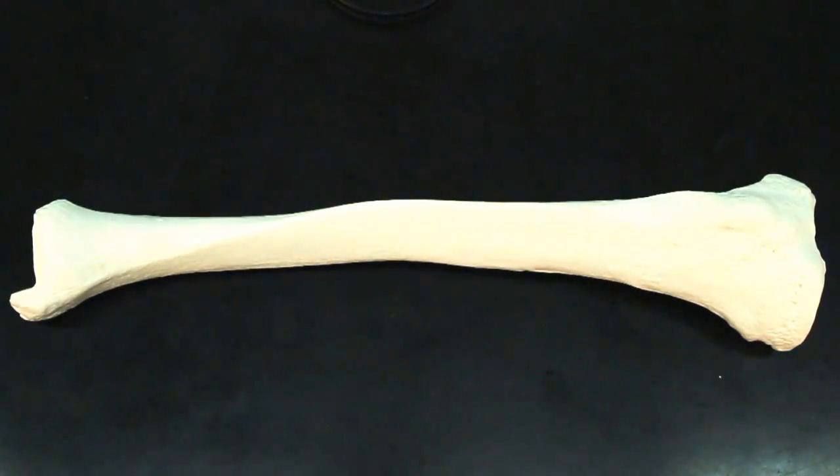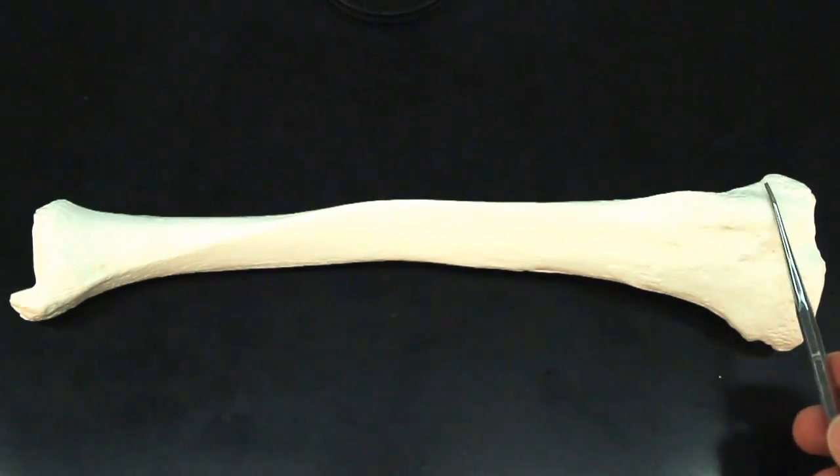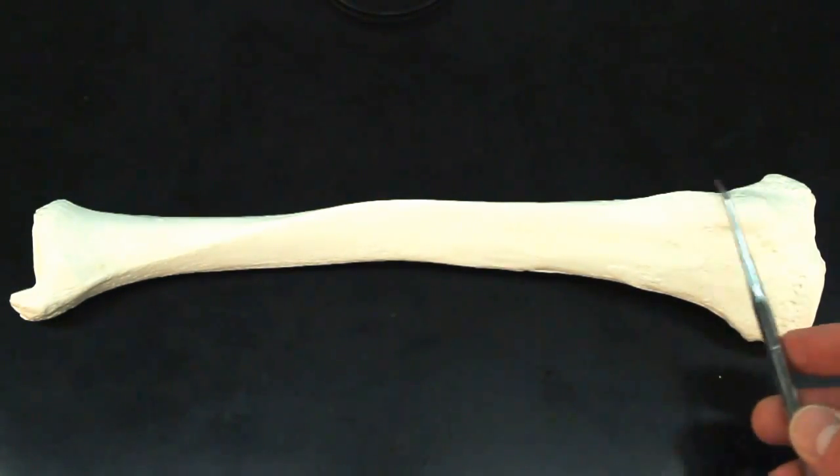This bone is the tibia. Now, the tibia has a rough protrusion on the anterior proximal surface.